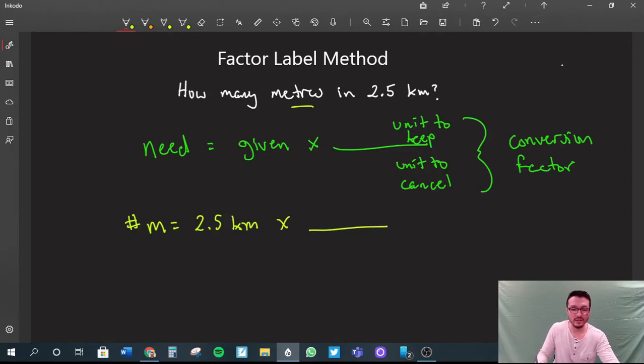Then we write a conversion factor. You'll always be given a conversion factor, or you'll use whatever you have in your toolbox. In this case, you should know that we have 1,000 meters for every 1 kilometer, or equals 1 kilometer.